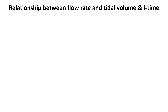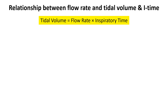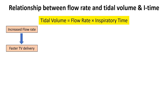Flow rate and tidal volume are closely related because flow rate determines how quickly tidal volume is delivered during inspiration, while both flow rate and inspiratory time together determine the total amount of air that enters the lungs per breath. If flow rate increases, tidal volume can be delivered faster with a shorter inspiratory time.